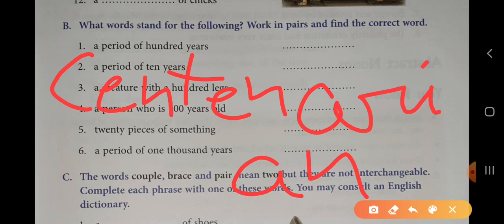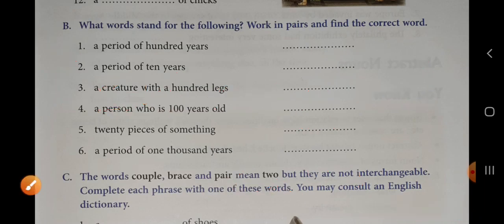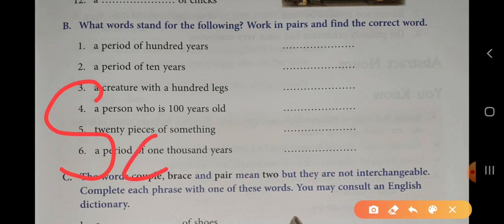Next is fifth number, twenty pieces of something. We know that when we talk about dozen, we have twelve things. When we talk about twenty pieces of something, what do we call it? Score. And the spelling of score is S-C-O-R-E.